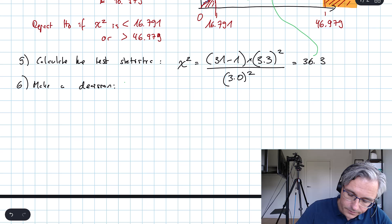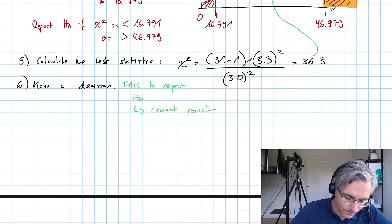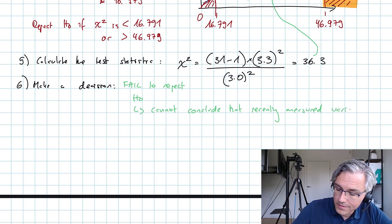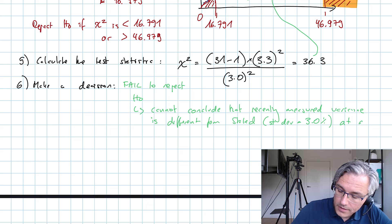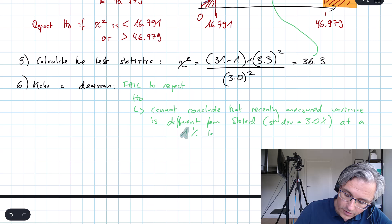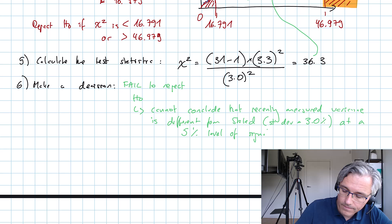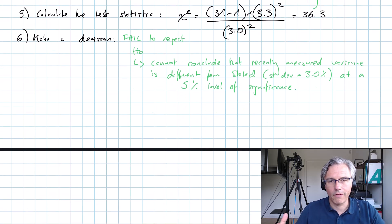Step number six is to make a decision. That decision is going to be that we fail to reject H0. We essentially, if we were to express this in words, cannot conclude that the recently measured variance or standard deviation is different from the stated standard deviation equal to 3% or variance equaling 3% squared at a 5% level of significance.